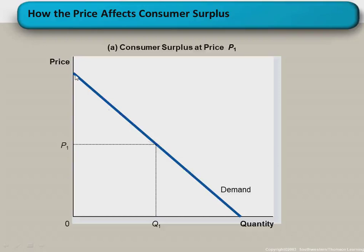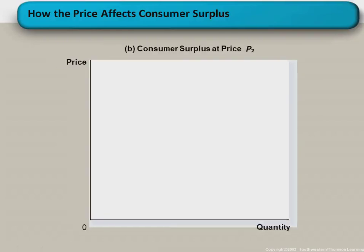Our price P1 meets the vertical axis at point B, and if we extend the price line to identify how many units are demanded at that price we get point C. Therefore, the area ABC is what we call the consumer surplus — the difference between what consumers are willing to pay and what they actually pay. The demand curve reflects the consumer's willingness to pay, and any price below it shows the surplus that accrues to consumers.